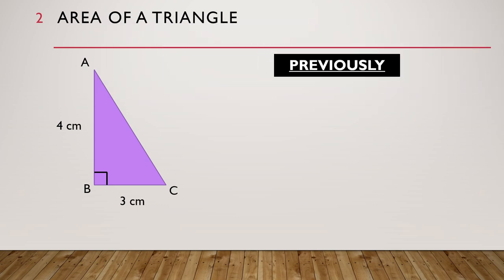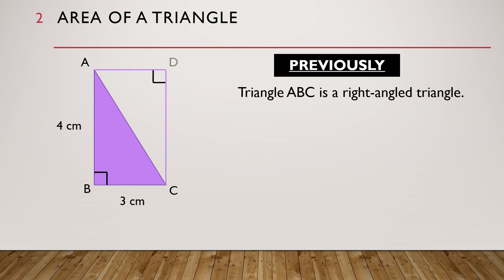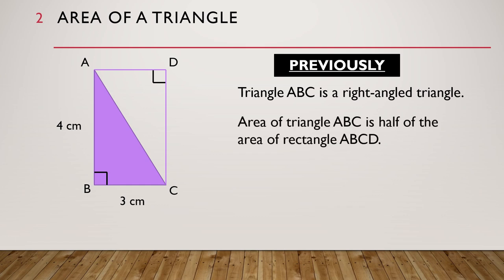Previously on area of a triangle, we have triangle ABC, which is a right-angled triangle. We drew two lines out from the triangle and got rectangle ABCD. The area of triangle ABC is half of the area of rectangle ABCD. So the area of triangle ABC is equal to half times 4cm times 3cm, which is equal to 6cm².